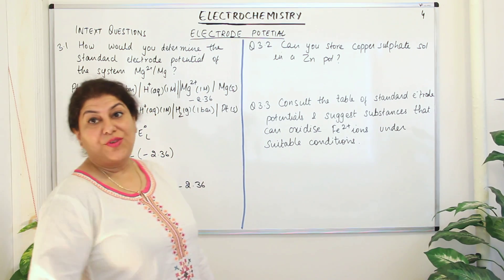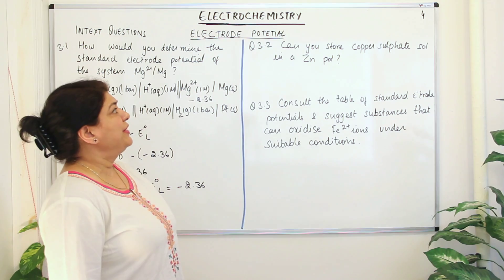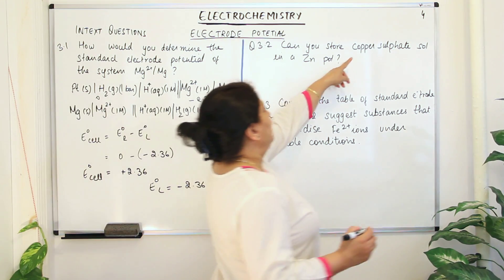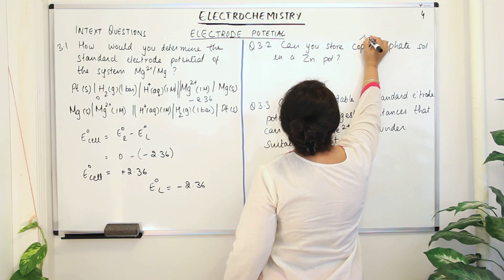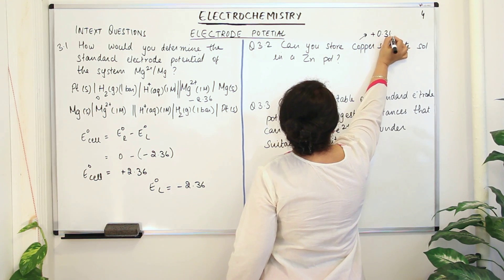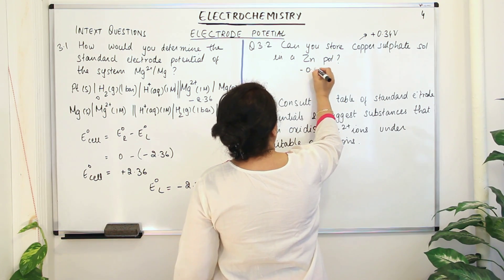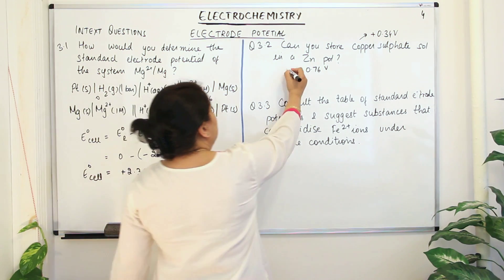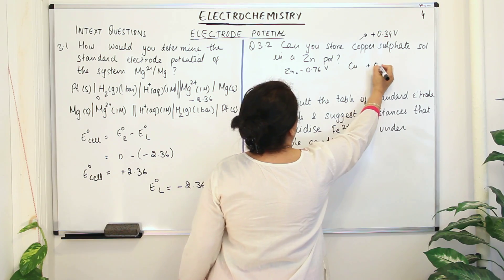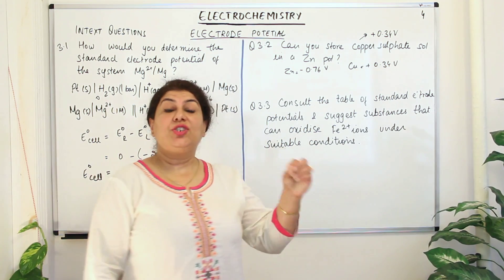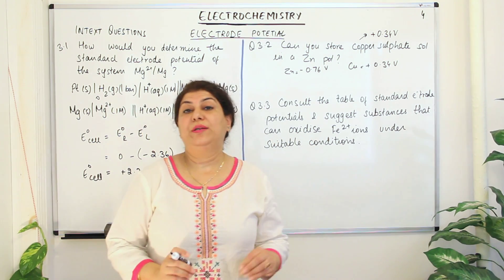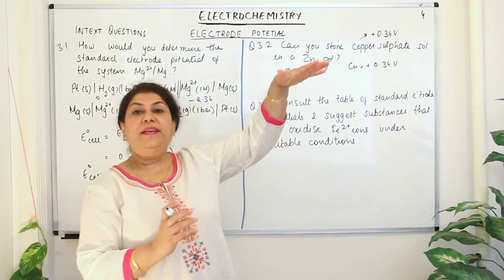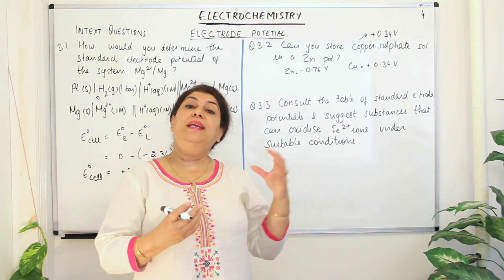Let us come to question 3.2: can you store copper sulfate solution in a zinc pot? If you see the electrode potentials of copper and zinc — as we saw in the Daniel cell — the electrode potential for copper is +0.34 V and for zinc is −0.76 V. These are the reduction potentials. The more positive the value, the more the reduced form of that substance is stable, because higher reduction potential means a greater tendency for that substance to remain in the reduced form.